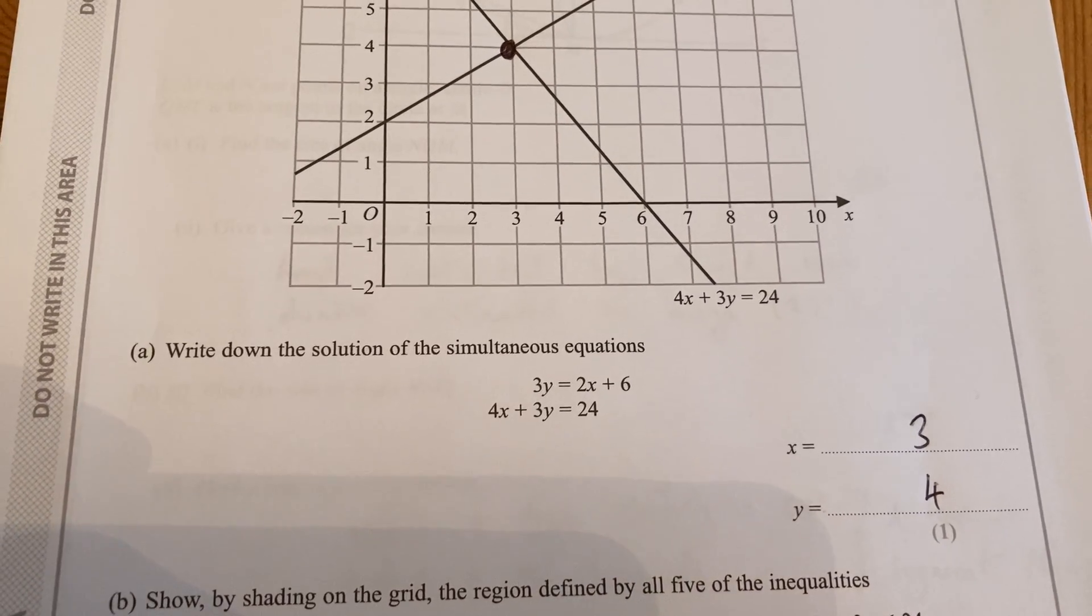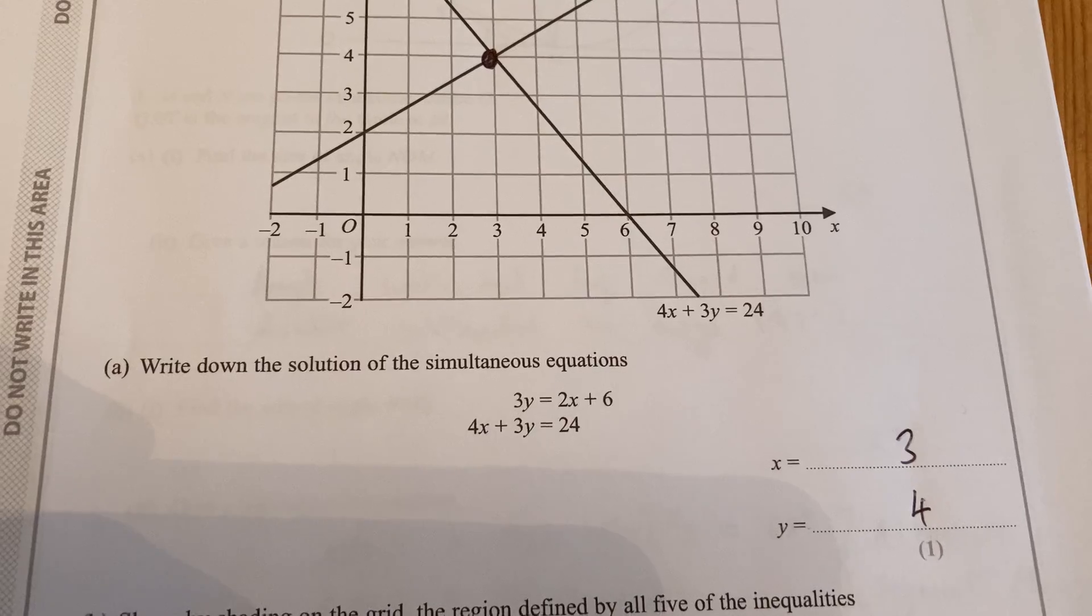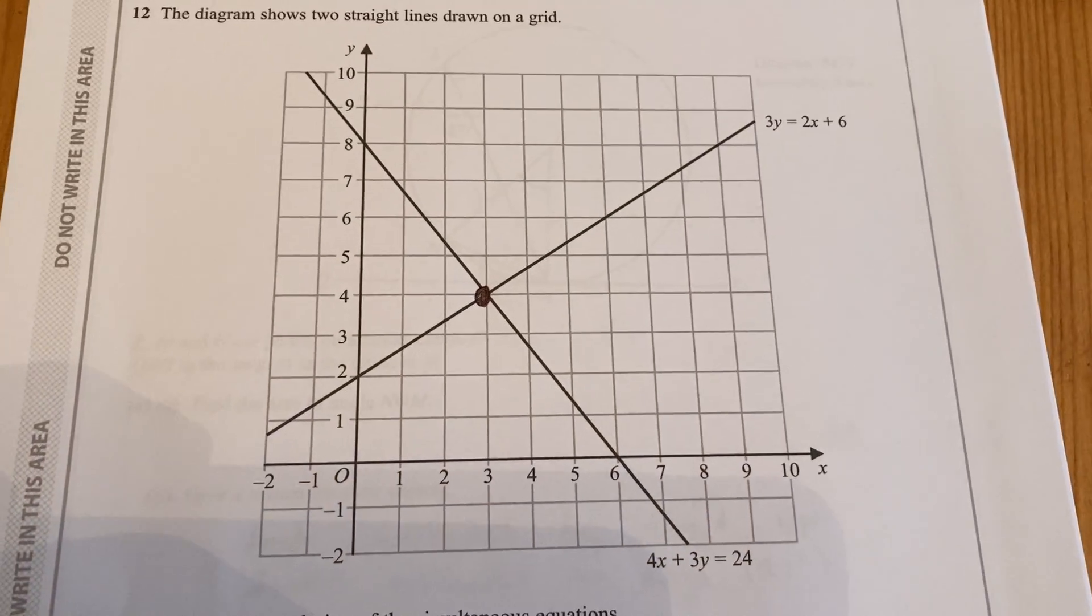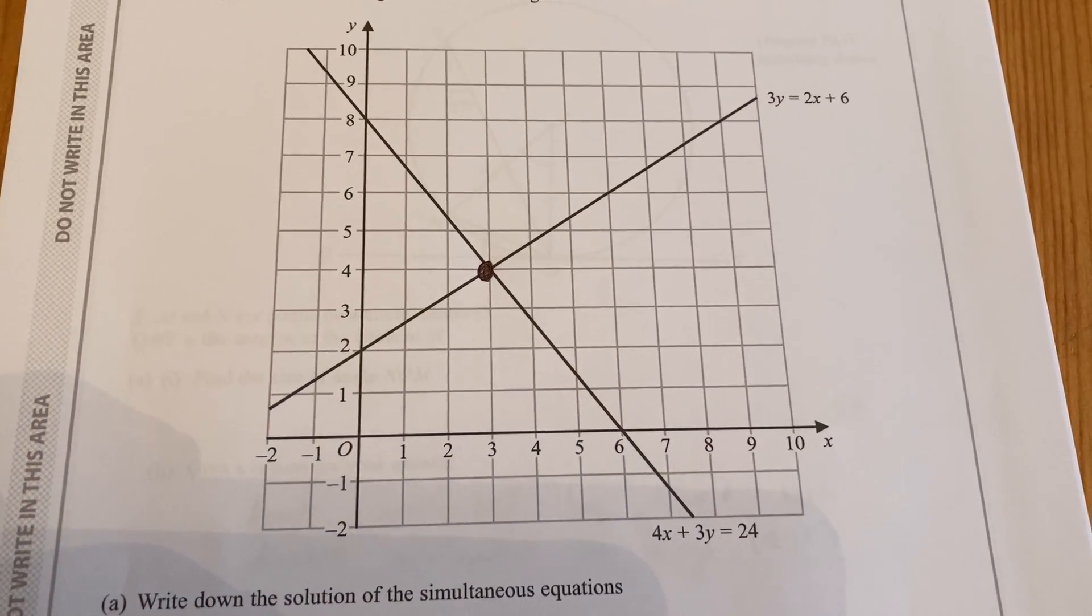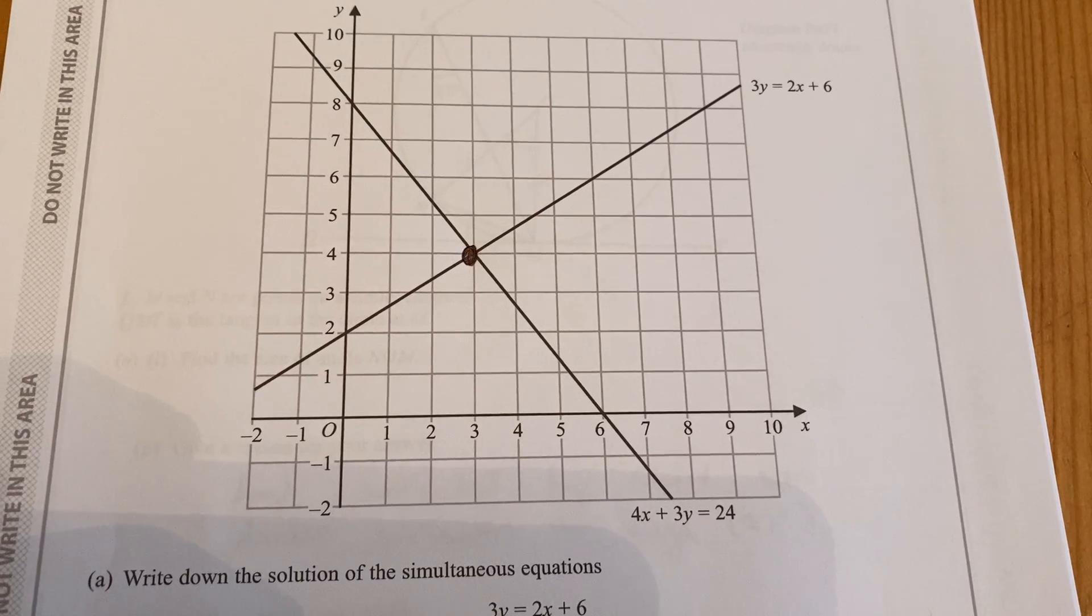Well, the simultaneous equations can be drawn on the graph, the two lines, there they are, 3y equals 2x plus 6 and 4x plus 3y equals 24.